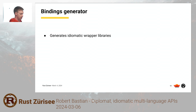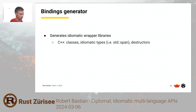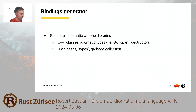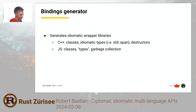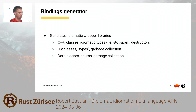The last part is the binding generator — there's one for each language, which just generates the language-specific code. In C++ we generate classes, using std::span, std::string, result, and all that. In JavaScript it's a bit messier, but we also support TypeScript with classes and enums, aka strings. We hook up garbage collection, which I'll get to later. Dart is similar to JavaScript — also garbage collected, but with a slightly nicer type system. We also generate docs.